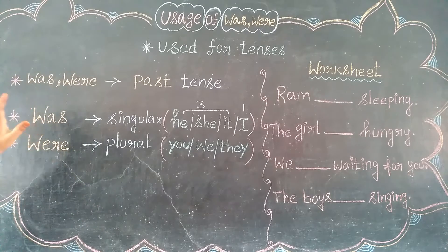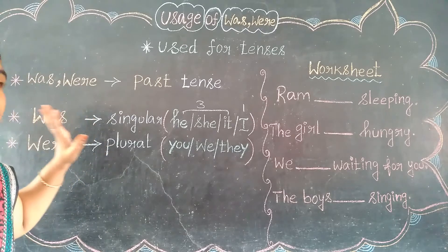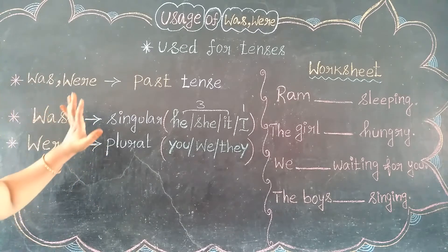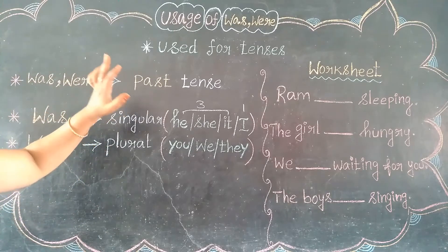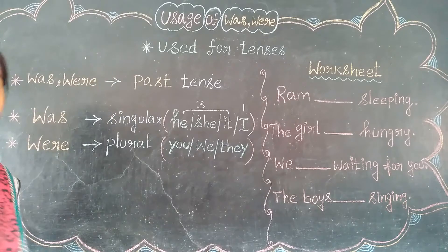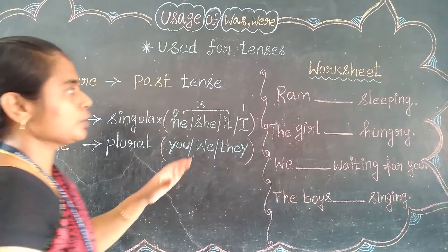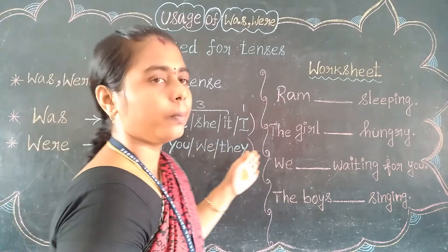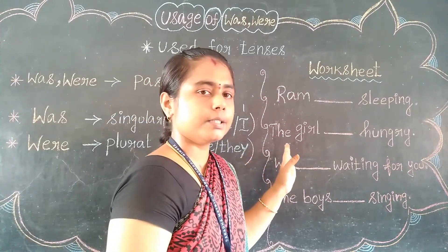So, that's it. This is the rule, children — the rules of using 'was' and 'were'. So, let's do the worksheet now. Let's begin.